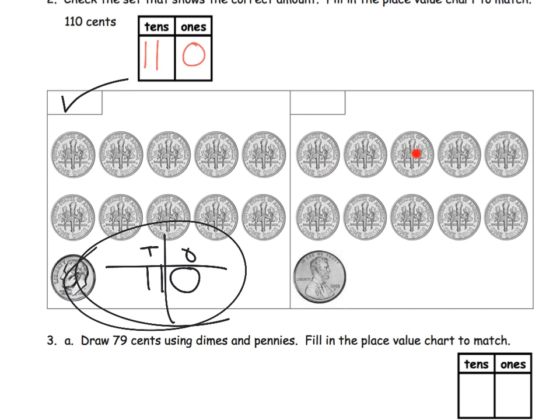So we've got one, two, three, four, five, six, seven, eight, nine, 10. We've got 10 dimes, tens and ones. We've got 10 dimes and one penny. This is not the winner. So we're supposed to put a check mark next to the one that correctly matched it. So it's this one, which is 11 dimes, zero pennies.